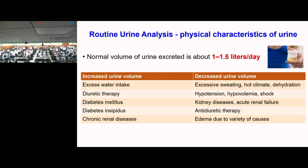Decreased urine volume can occur due to dehydration, profuse sweating, hypotension, hypovolemia, shock, kidney diseases, anti-diuretic therapy, and edema from various causes such as cardiac or liver disease.